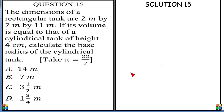We are about solving question 15. The dimensions of a rectangular tank are 2 meters by 7 meters by 11 meters.